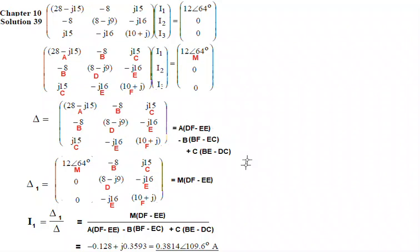And then to find current I1, we have to use delta 1 by delta. So for delta 1, we replace the first column by the voltage value. So we are replacing this column by this voltage value here. So this becomes our delta 1. And for this, the equation will now become M multiplied DF minus EE. So M multiplied DF minus EE. And since these two are 0, so there will be 0.